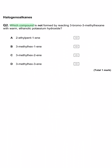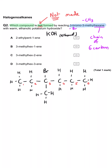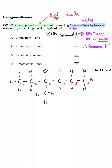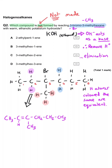Which compound is not formed by reacting 3-bromo-3-methylhexane with warm ethanolic potassium hydroxide? These conditions mean the hydroxide ion acts as a base and removes a proton from a carbon adjacent to the carbon attached to the halogen. Looking at the structure, there are three possible hydrogen atoms that could be removed. Removing one from the left gives 3-methylhex-2-ene in an elimination reaction.